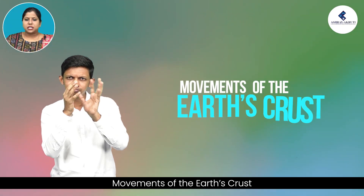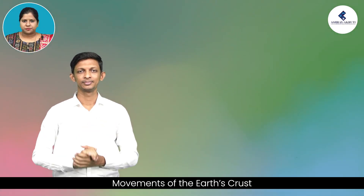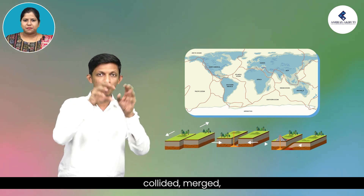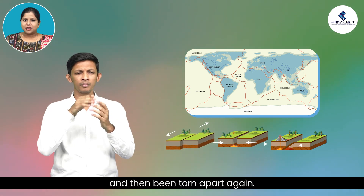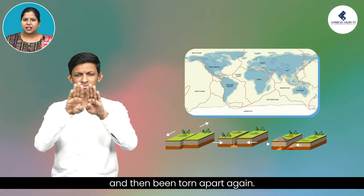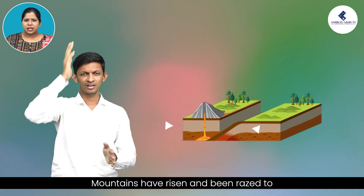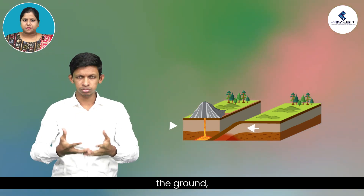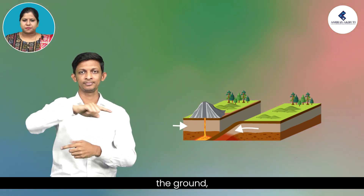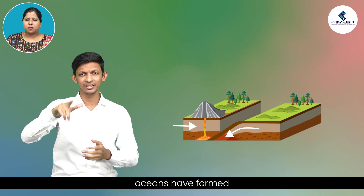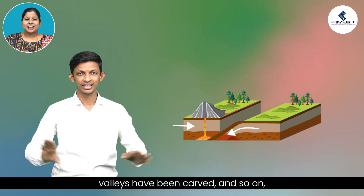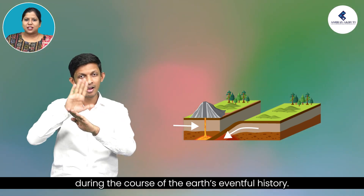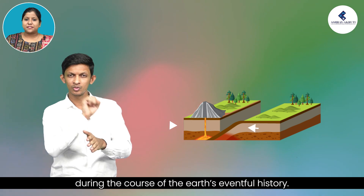Movements of the Earth's crust. Continents have moved, collided, merged and then been torn apart again. Mountains have risen and been razed to the ground. Oceans have formed and dried up. Valleys have been carved, and so on, during the course of Earth's eventful history.